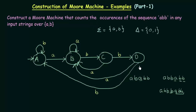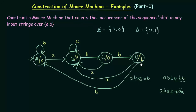In this DFA, whenever we reach state D — no matter what path we came from — we are sure we have got the sequence A, B, B. So at this point I will give the output as 1 in state D. In all other states, I will give the output as 0. Whenever we get the output 1, we realize that we have encountered the sequence ABB. Let's take a few examples and check if this is working correctly.